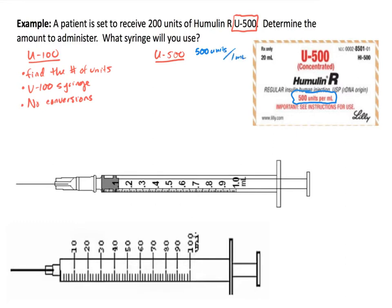Now recently, pharmaceutical companies did begin to create U500-calibrated syringes. However, we have been instructed in this course to continue teaching that instead of using U500-calibrated syringes, what we will need to do with U500 is convert the units into mL and use a one-milliliter TB syringe.